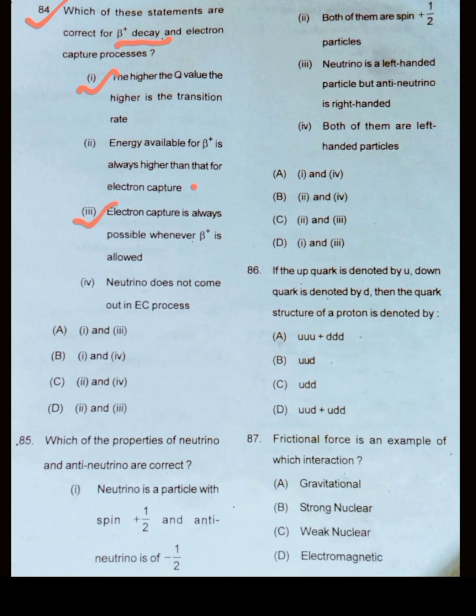Neutrino does not come out in electron capture process. In beta decay process or electron capture process, the momentum and angular momentum and energy is not conserved. Therefore, the neutrino hypothesis came into existence. So it is not possible that neutrino does not come out in this process.